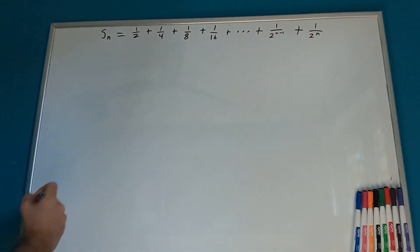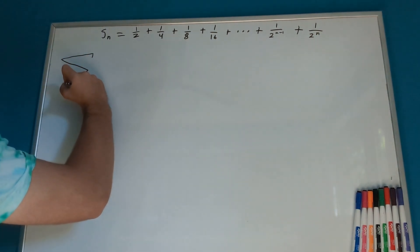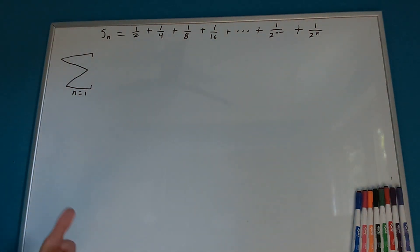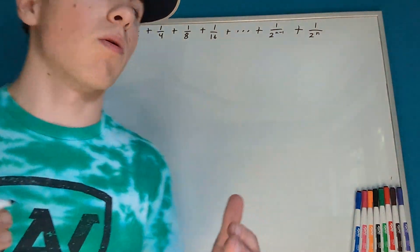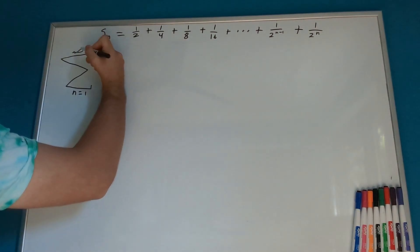So, the first thing we should do is let's just write this as summation notation. So, we have a little summation notation thing. Our lower bound is going to be n equals 1. Now, in this case, we're going up to infinity. So, our upper bound on the summation notation is going to be infinity.